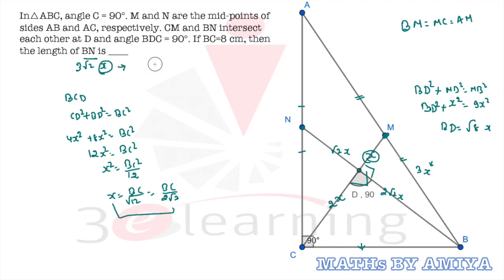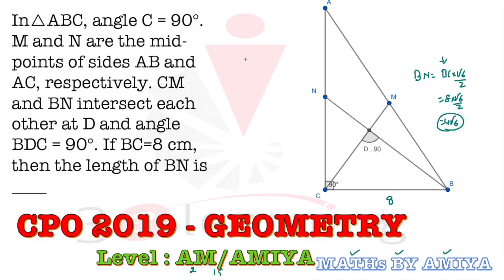Now put the value of X here. 3 root 2 into X is nothing but BC upon 2 root 3. So the root 3 cancelled out is nothing but root 3. Root 3 and root 2 is nothing but root 6 divided by 2 into BC. I hope it is okay. And the BC is given 8. So root 6 divided by 2 into 8 is nothing but 4 root 6 is the answer of this question. Or we know the value of this is nothing but root 6 by 2 BC. Which one is on the first slide?